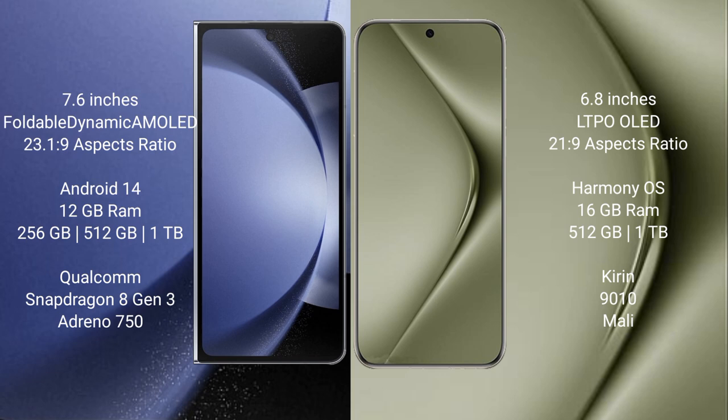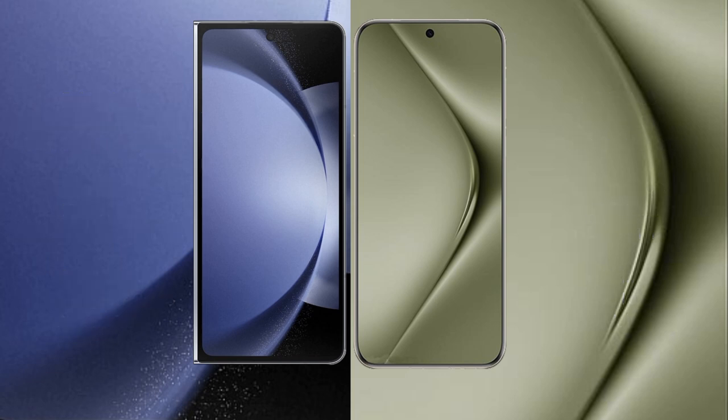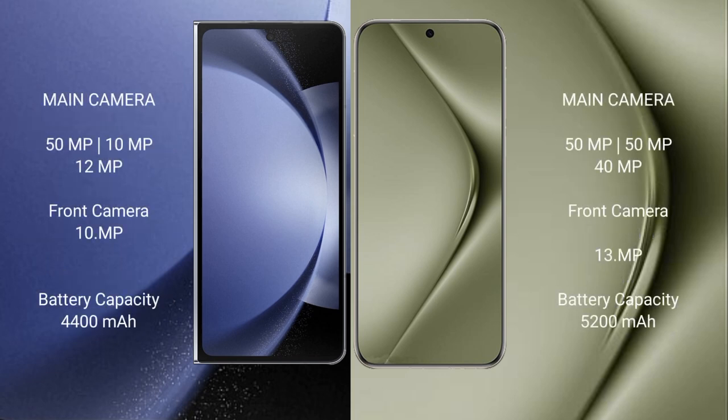Samsung Galaxy Z Fold 6 features a Qualcomm Snapdragon 8 Gen 3 processor with Adreno GPU. Huawei Pura 70 Ultra comes with 16GB RAM and 512GB or 1TB internal storage, with a Kirin 9020 processor and Mali GPU.